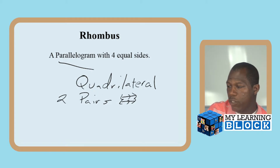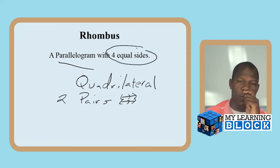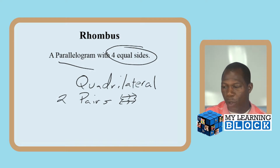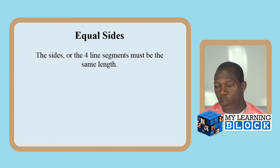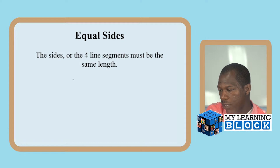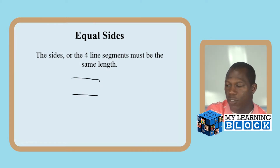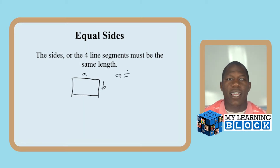Now we're going to go a step further — we said that it has four equal sides. There's another quadrilateral we're going to talk about with four equal sides as well, and it'll come up in a moment. So what does it mean to have equal sides? It means that the four line segments on the polygon quadrilateral rhombus are the same exact length. You cannot have a rectangle, for instance, because sides B are not equal to sides A — they're not equal. All four sides have to be equal, and it has to be a parallelogram.